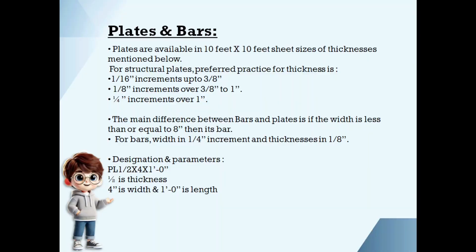Plates and bars. Here is the available plate thicknesses. It will start from 1/16th inch and will be available in 1/16 increments up to 3/8, meaning 1/16 thickness will be available, 1/8 will be available, 3/16 will be available, 1/4 will be available, 5/16 will be available, and then 3/8 will be available. After 3/8, it will be in 1/8 increments, meaning after 3/8, half inch will be available, then 5/8 will be available, then 3/4, then 7/8, and then 1 inch. After 1 inch, it will be in quarter inch increments: 1/4, 1 and half, etc. in that way. For all these thicknesses, plates are available in sheets of 10 feet by 10 feet.